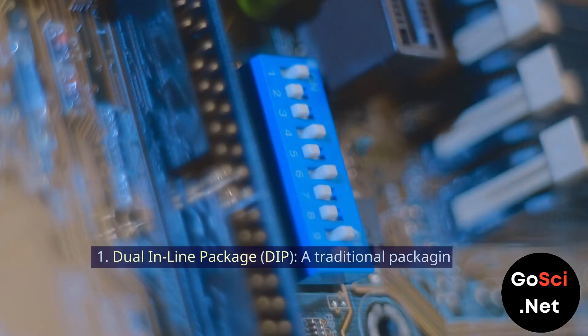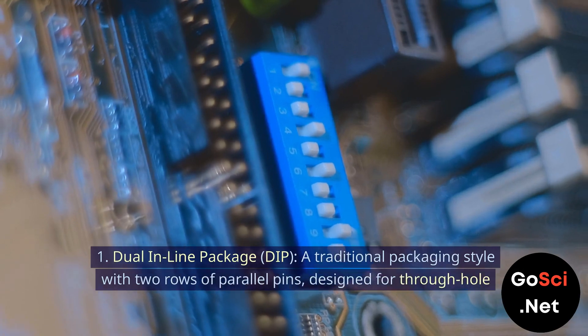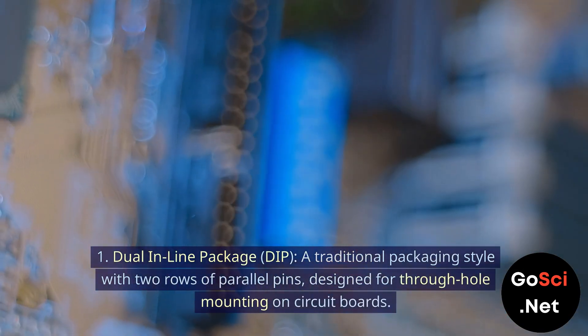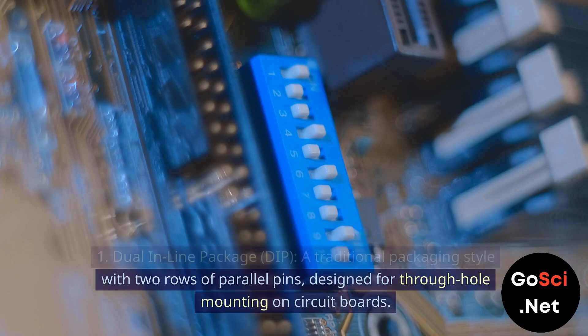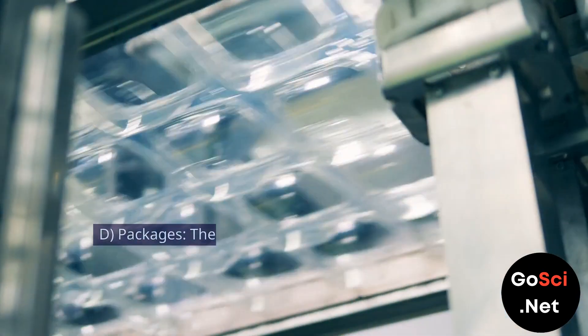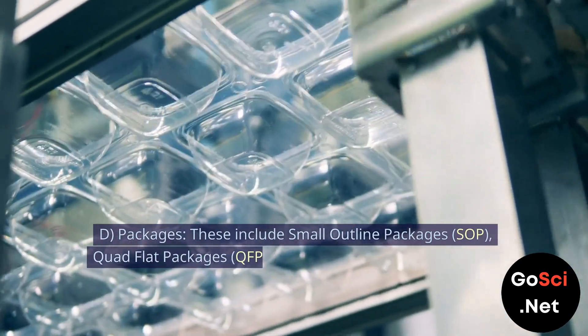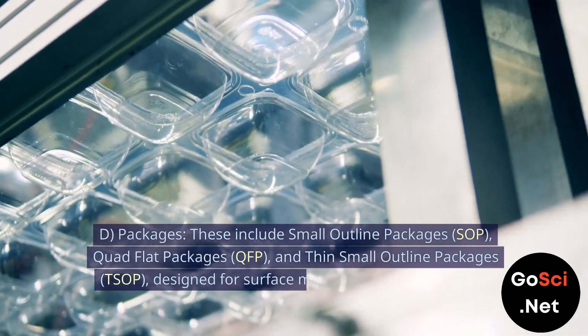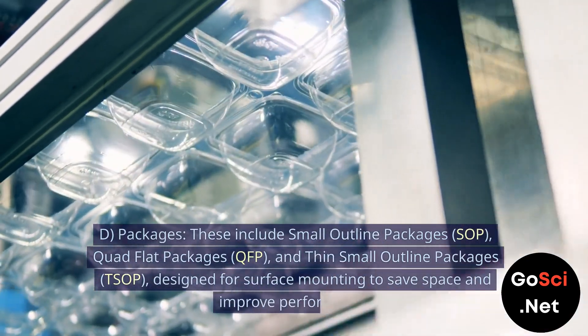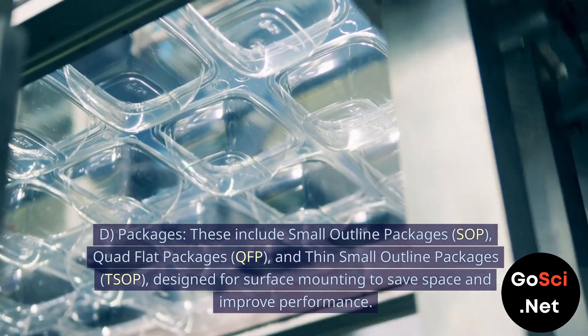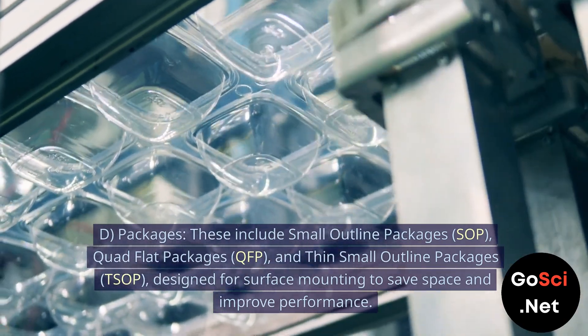1. Dual in-line package (DIP), a traditional packaging style with two rows of parallel pins, designed for through-hole mounting on circuit boards. 2. SMD packages, which include small-outline packages (SOP), quad-flat packages (QFP), and thin-small-outline packages (TSOP), designed for surface mounting to save space and improve performance.